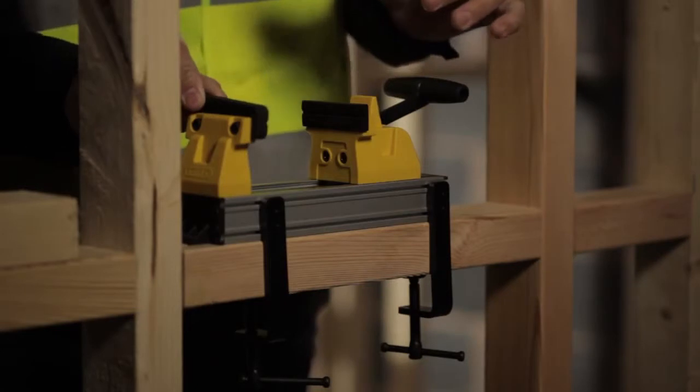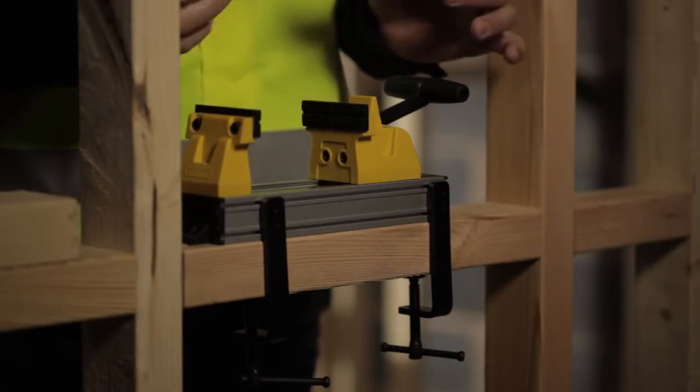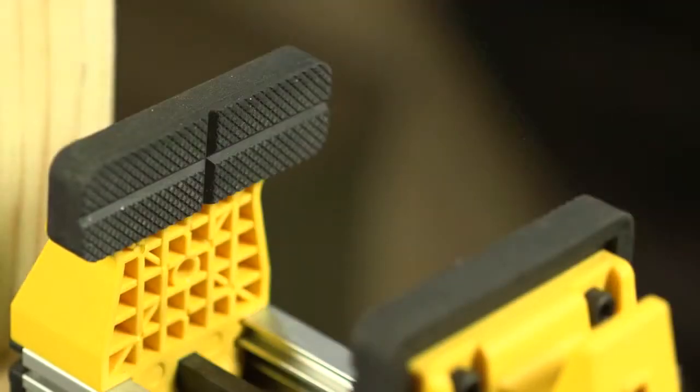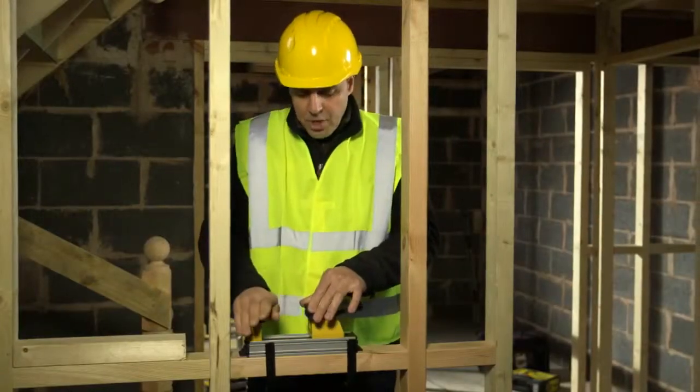It has removable protective rubber jaws as well. So if you are working with a soft wood or you are a hobbyist and you want to protect whatever it is you're clamping, these will do the job for you.